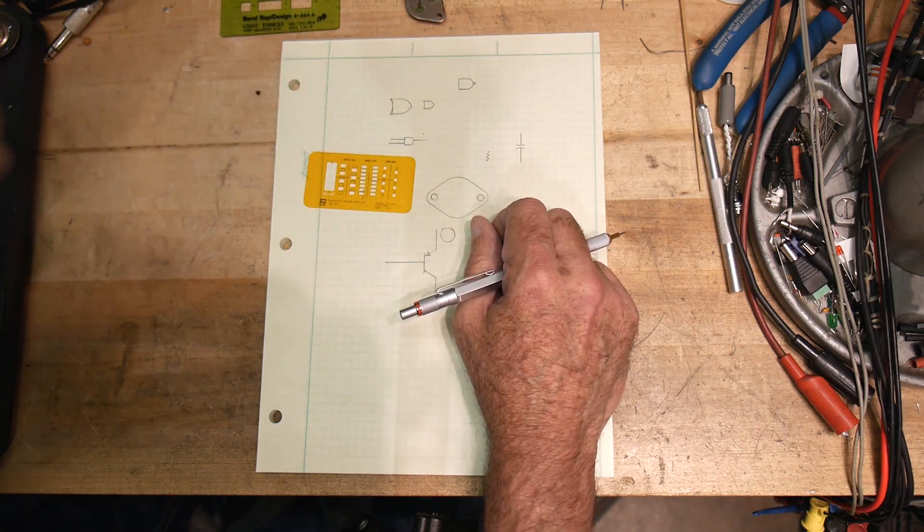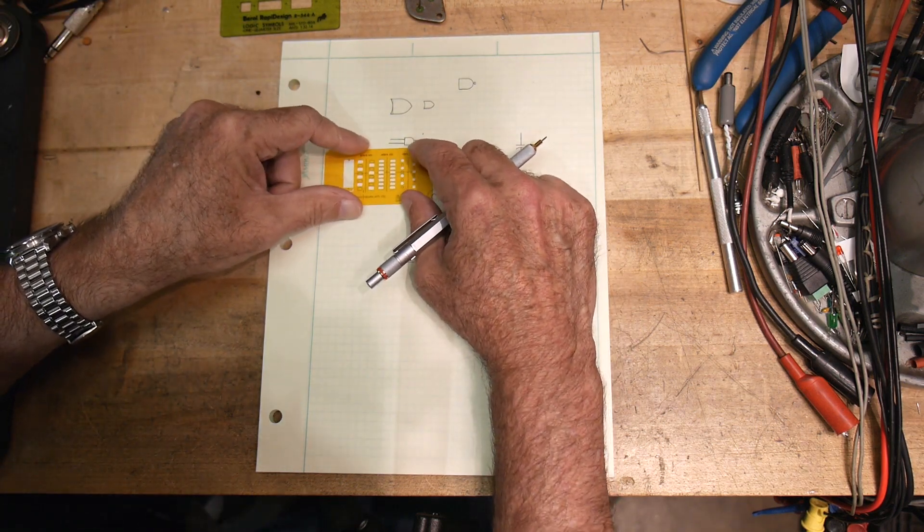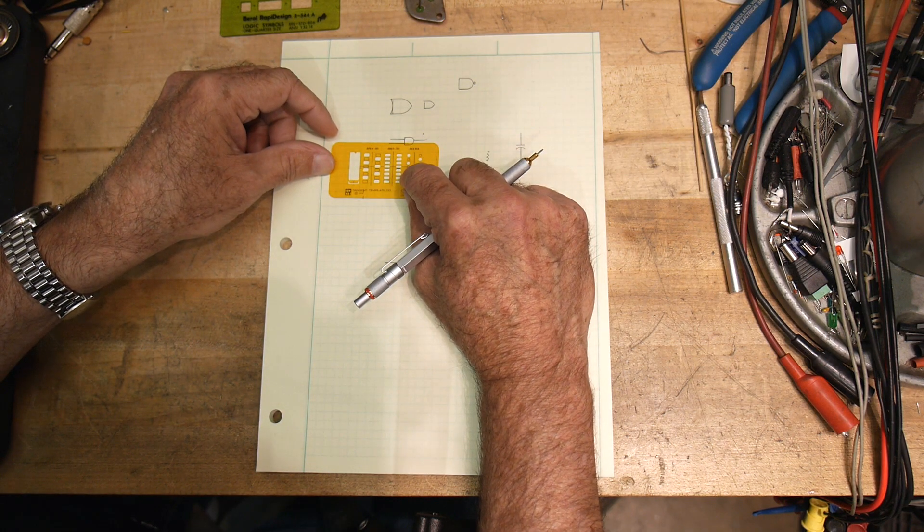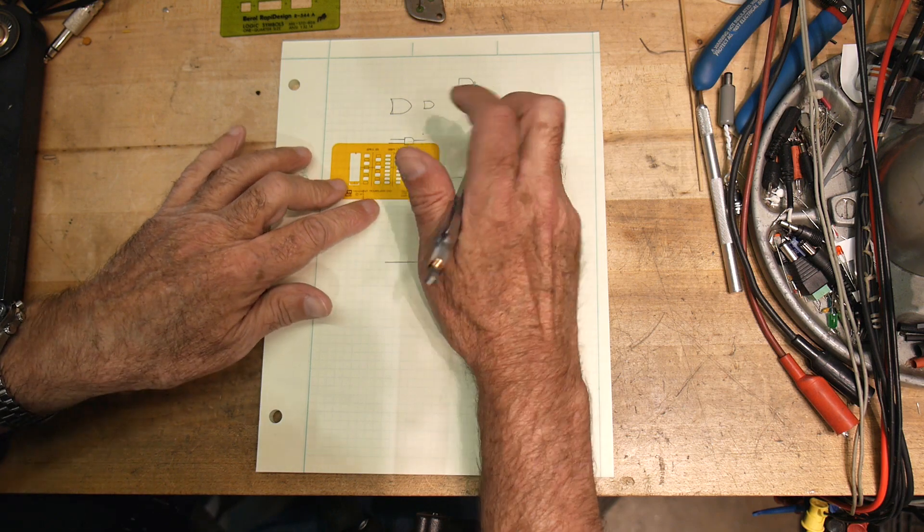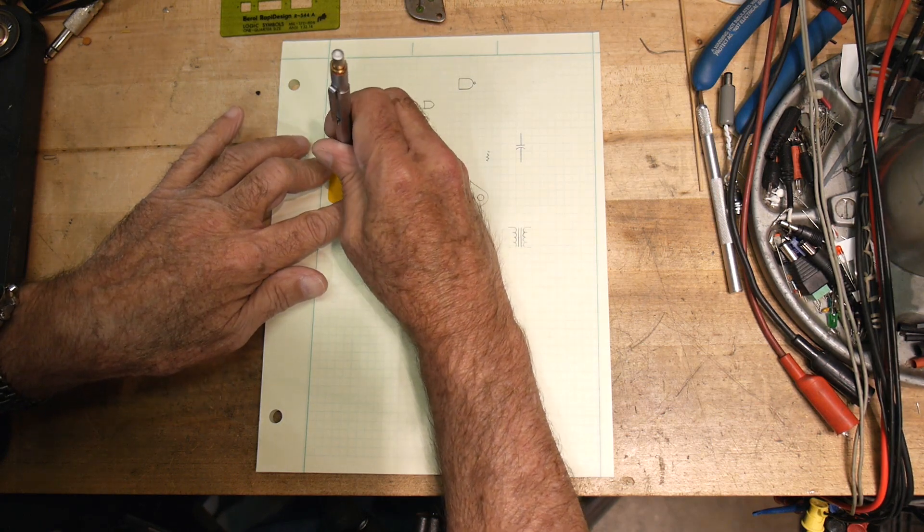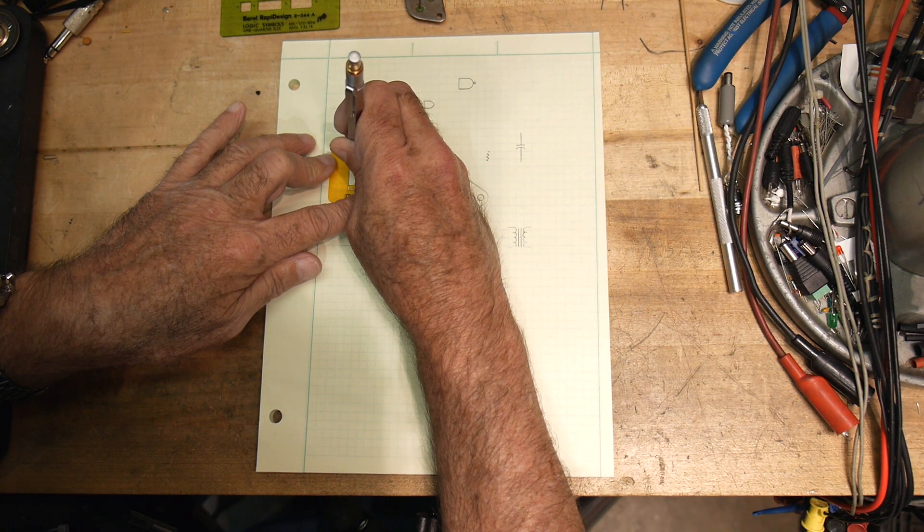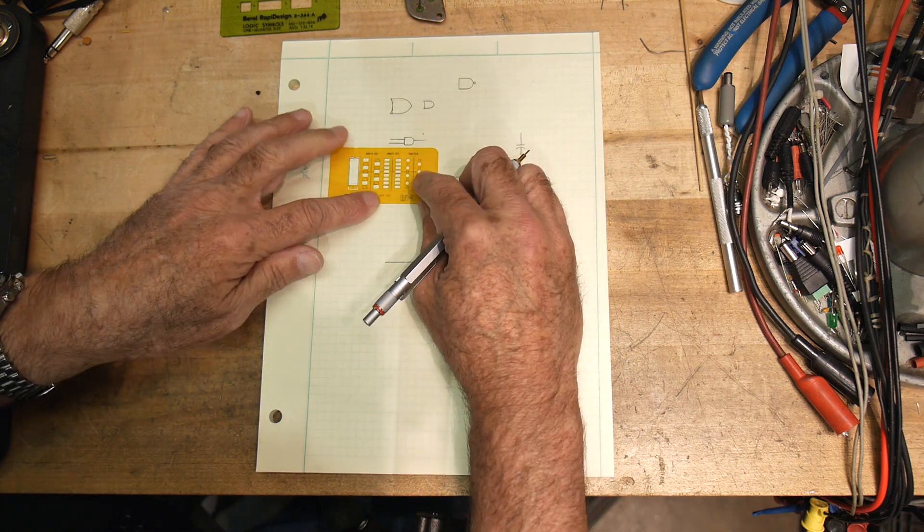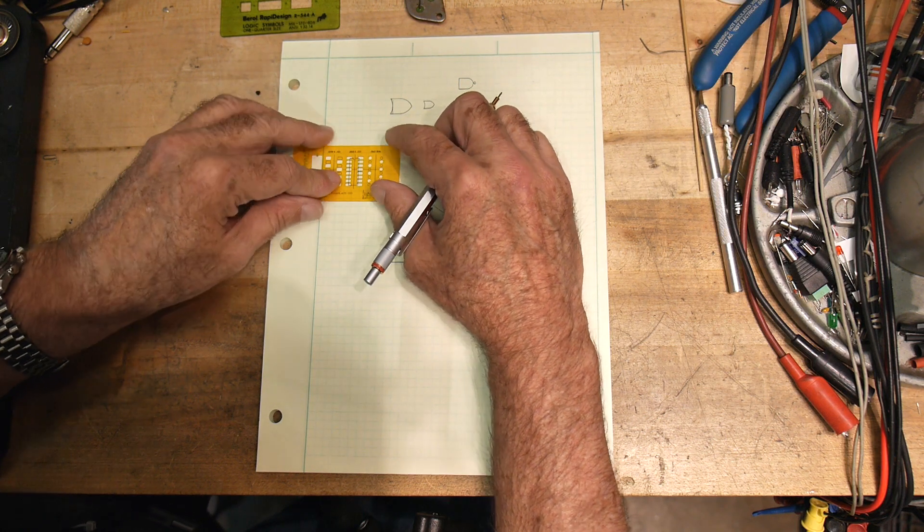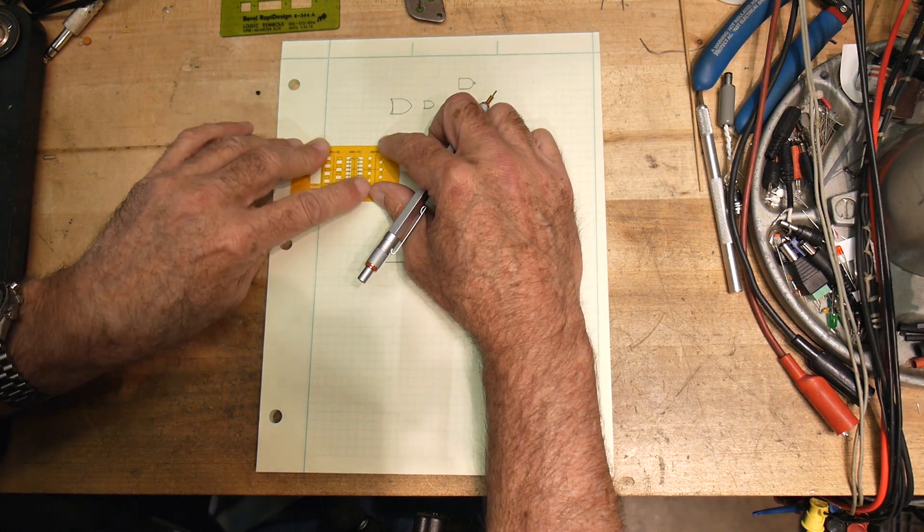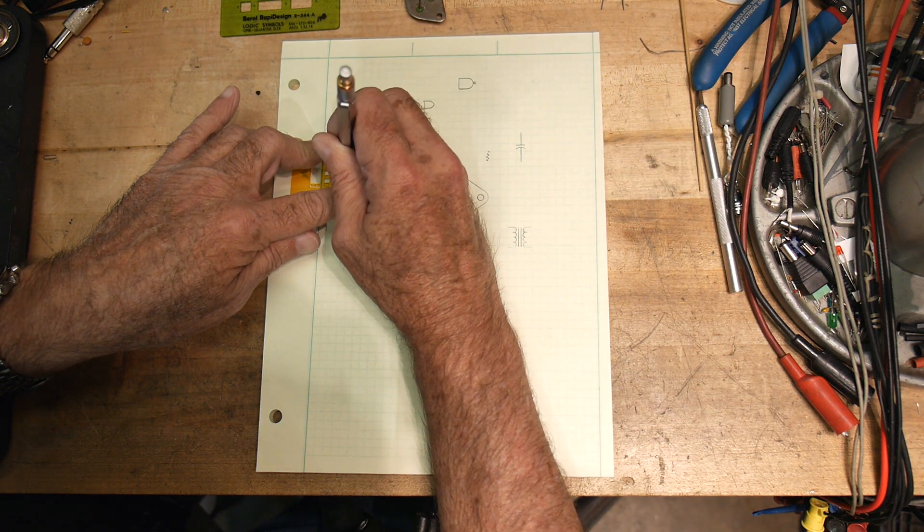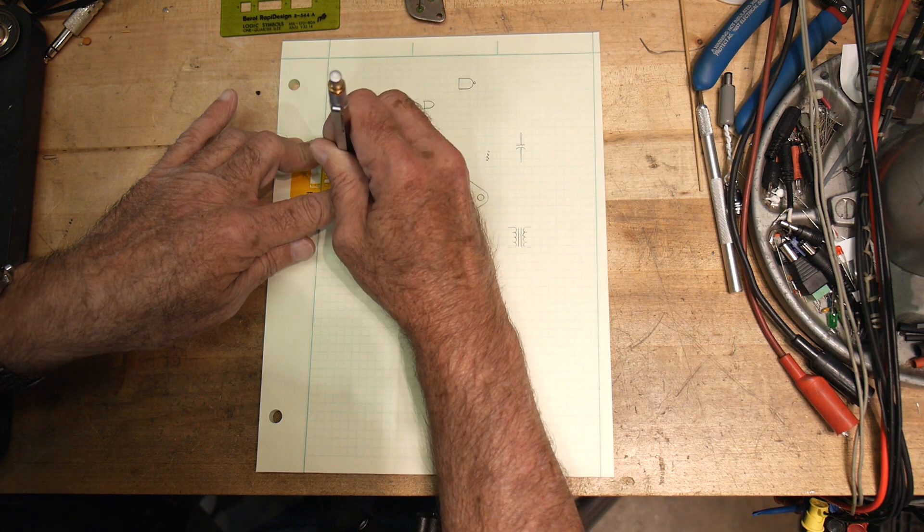And the last one I had is this one, which also is a PC board layout. And this is just for the 300 mil center DIP package. Oops. Get it square with the page here. It's got the little notch in there, which is nice. And then you could come along and put down the pads for the legs.